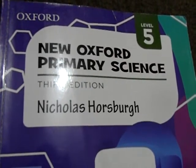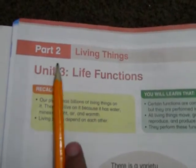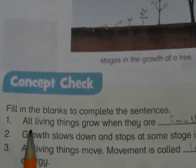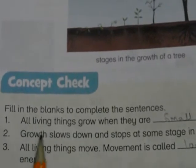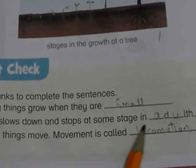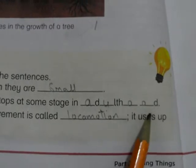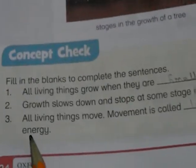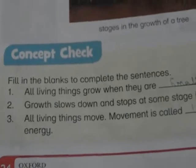Assalamu alaikum students, today we are going to study science class 5 part 2: living things and life functions. In the last video we completed our lesson till page number 25. The concept check fill-in-the-blanks: all living things grow when they are small; growth slows down and stops at some stage in adulthood. All living things move — movement is called locomotion — it uses up energy. This is page number 24.